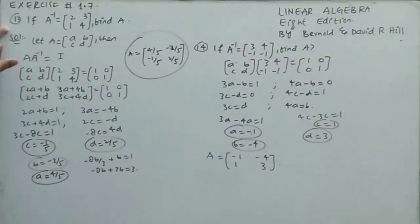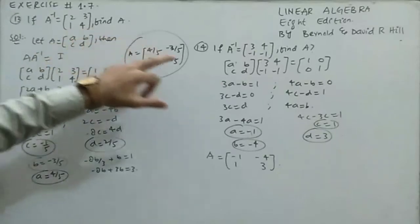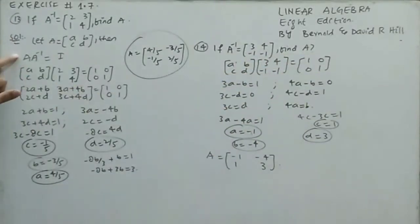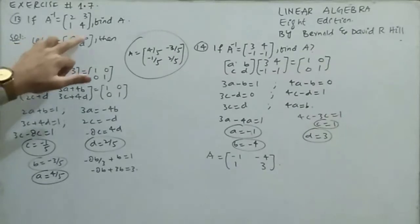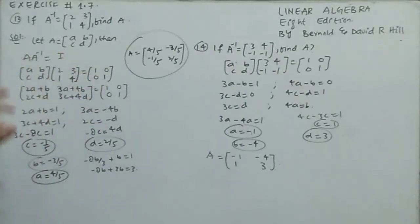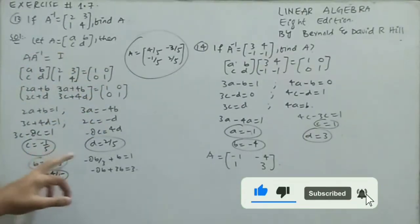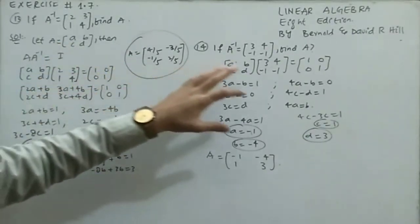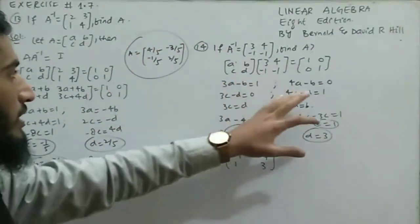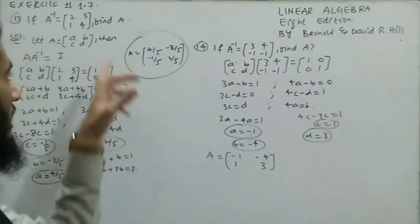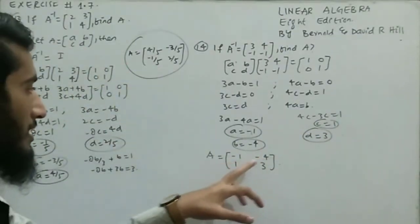Question 13: if A⁻¹ = [2, 3; 1, 4], find A. Question 14: if A⁻¹ = [3, 4; -1, -1], find A. Using the formula A · A⁻¹ = I, let A = [a, b; c, d]. Multiplying and solving the linear equations gives for Q13: a = 4/5, b = -3/5, c = -1/5, d = 2/5, giving the required A. For Q14, the same approach gives A = [-1, -4; 1, 3].